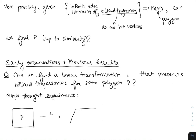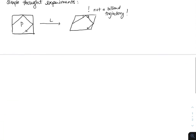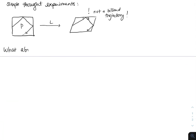What will happen if we apply a linear transformation L? The square is going to go to some parallelogram. Here's the billiard trajectory I picked, where it hits the midpoints of all the edges. We see here that the angles are not equal, and so this is not a billiard trajectory. So this pair P and L doesn't satisfy — it doesn't answer the question I asked.